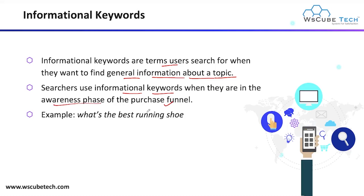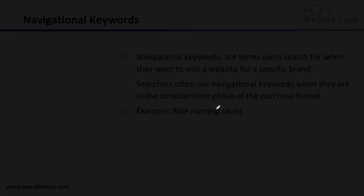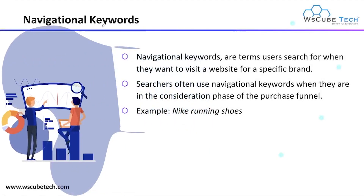For example, 'what's the best shoes?' — this is a generic informational keyword where the user is asking for general information. Next we have navigational keywords. Navigational keywords are used when searchers want to visit a specific brand. They are in the consideration phase of purchase. For example, 'Nike running shoes' — it means they are now in the consideration phase.